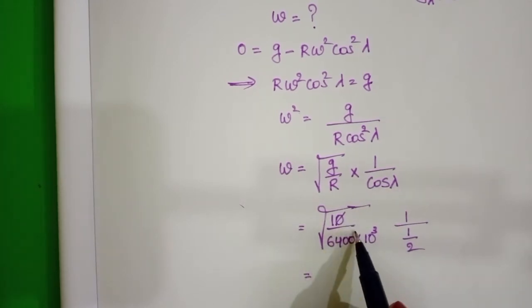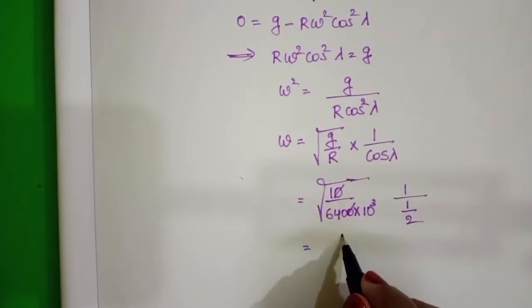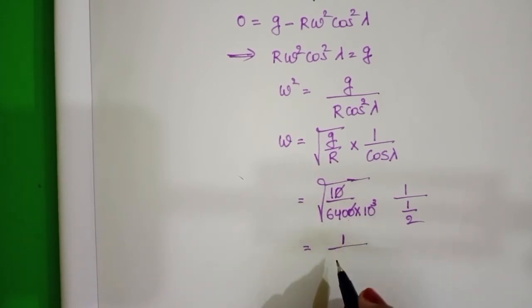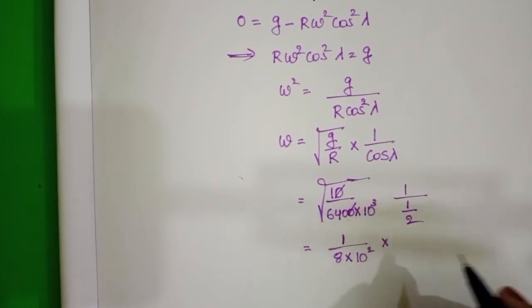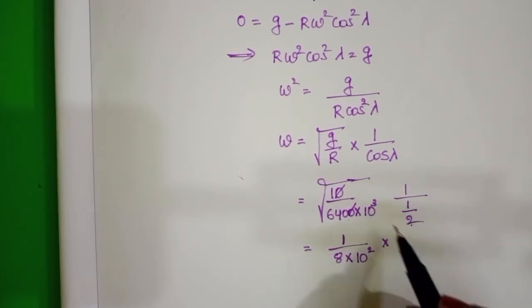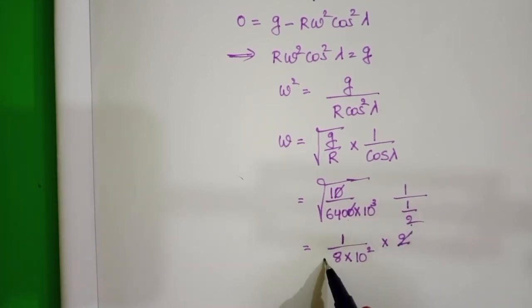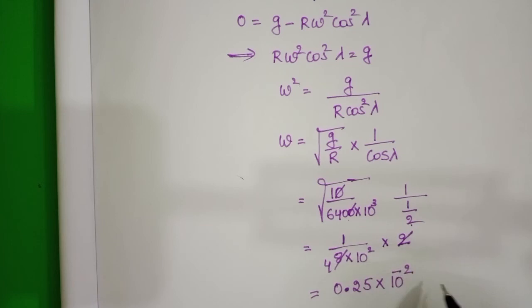Here 1 and 0 get cancelled. 1 by square root of 64 is 8. 10 power 4 becomes 10 square. 10 square into this, 1 by 2 goes to numerator and it becomes 2. So 2 into 1 is 2, into 4 is 8. 1 by 4 value 0.25, 10 square becomes 10 power minus 2 radian per second.